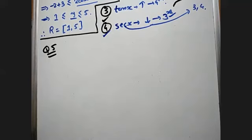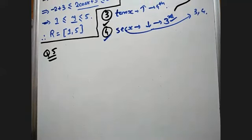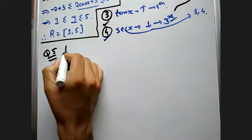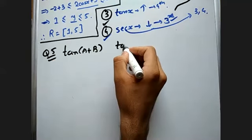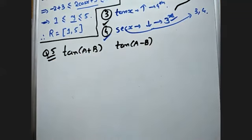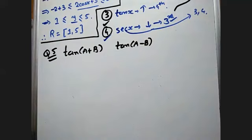Welcome everyone. We have to derive the formula of tan(A+B) and tan(A-B), and after that we will memorize these formulas. We will derive tan(A+B) with the help of sin(A+B) and cos(A+B). So first, tan(A+B) will obviously be sin(A+B) divided by cos(A+B).